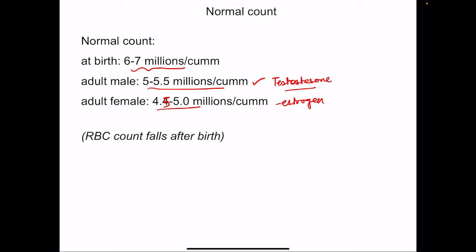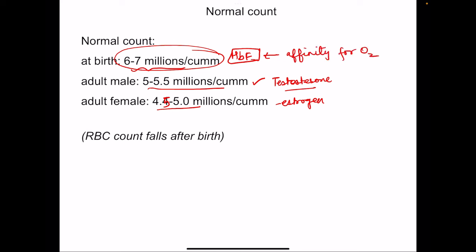At birth and in infants, the RBC count is much more compared to that in adults. Infants have hemoglobin F, and this hemoglobin F has a much higher affinity for oxygen. However, by virtue of having higher affinity for oxygen, there is a decrease in the release of oxygen to the tissues.